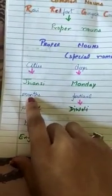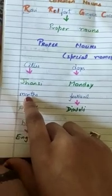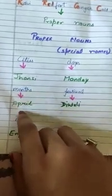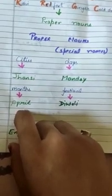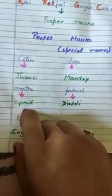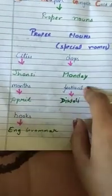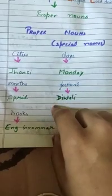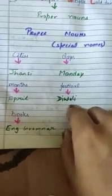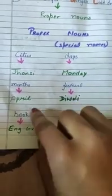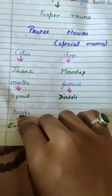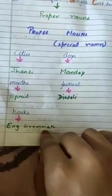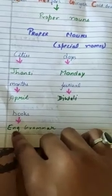Then months — the 12 months of the year: January, February, March, April — all are having different names. When we address them together, we call them 'months', which is the common noun. And when we address a particular month, like right now we are in April, that will be the proper noun. Then festival — there are many festivals in India which we celebrate, and if we want to address one particular favorite festival, it is Diwali — festival is the common noun and Diwali is the proper noun. Books — many books we have: Maths, Hindi, etc. When we give a special name to one particular book, like English Grammar, that is the proper noun.